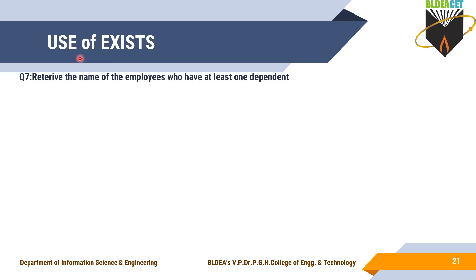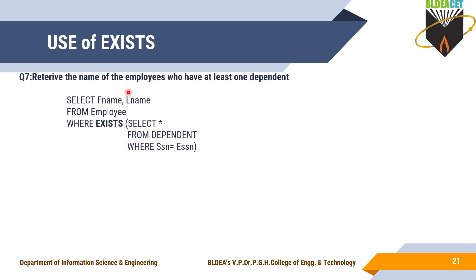Let's see an example for the EXISTS function: retrieve the name of employees who have at least one dependent. You want to retrieve the name, so: SELECT F_name, L_name FROM employee WHERE EXISTS (SELECT * FROM dependent WHERE SSN = ESSN). So if SSN equals ESSN, that condition if it is true, EXISTS works.